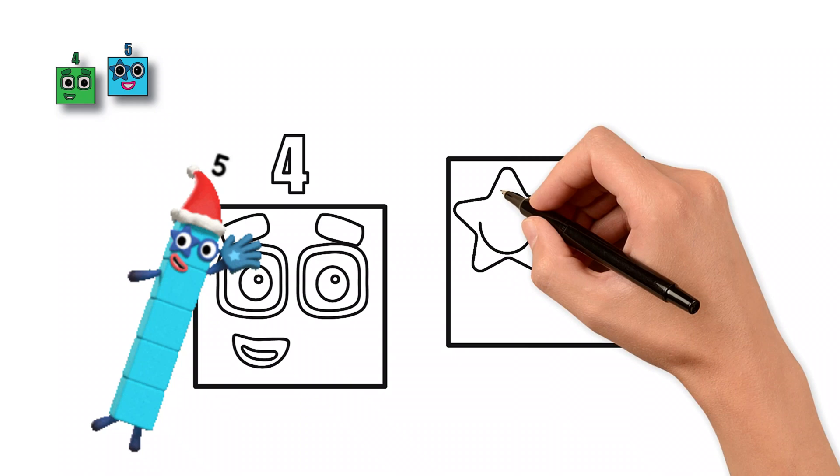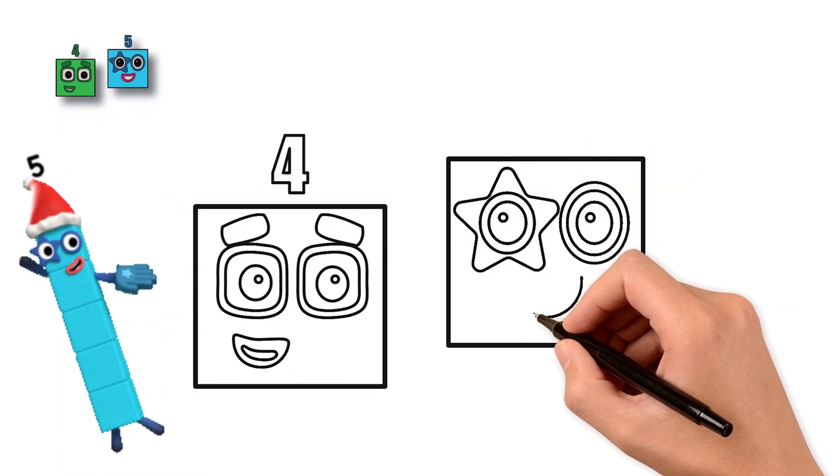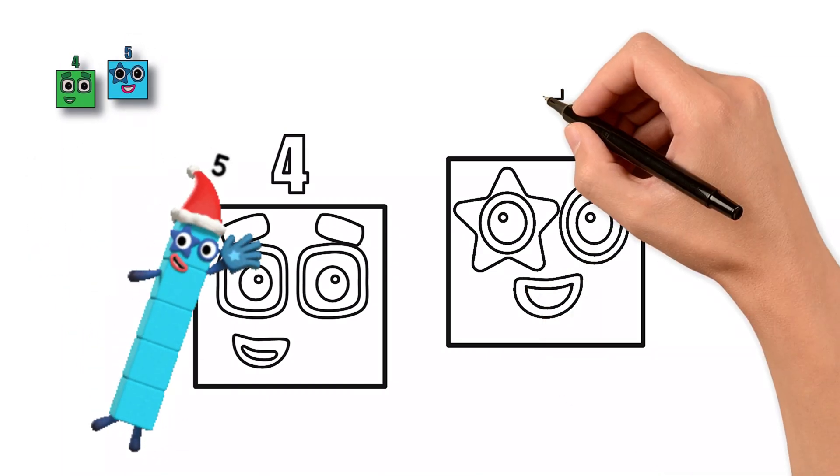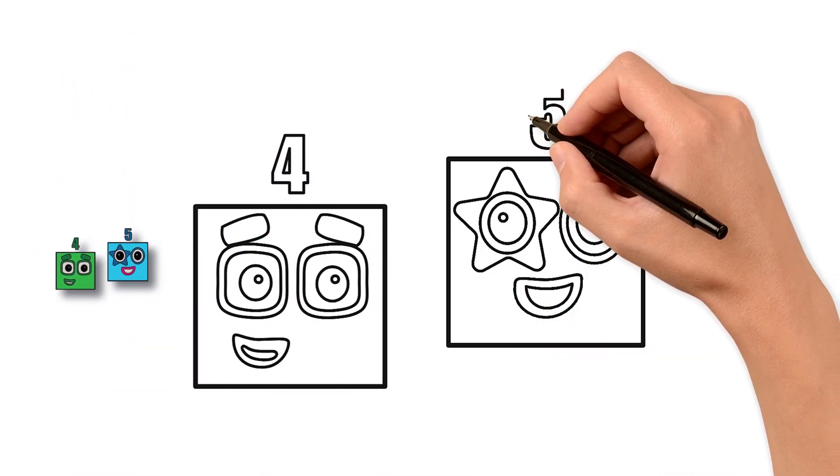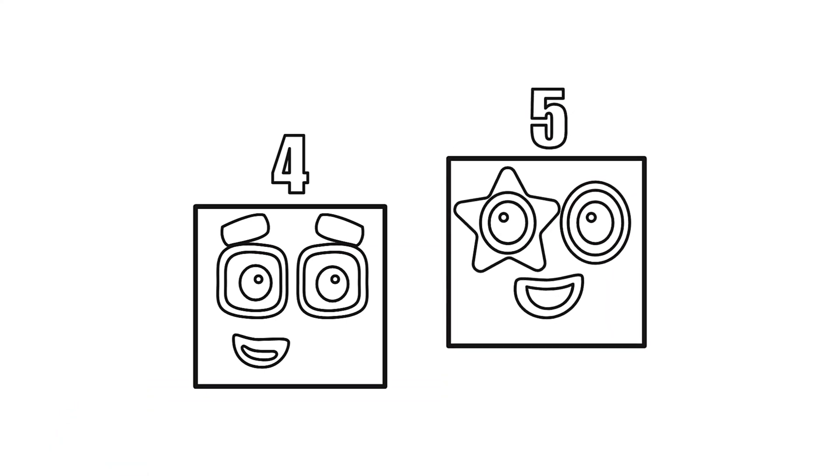Give number block five a cheerful smile. At the top, write the number five. That's F-I-V-E. I'm number block five. I'm made of five ones, or two plus three. And I love high fives.